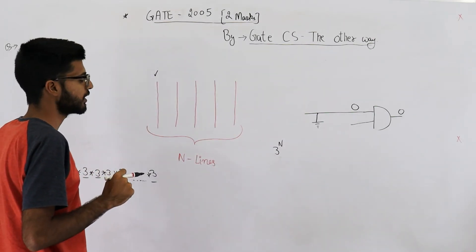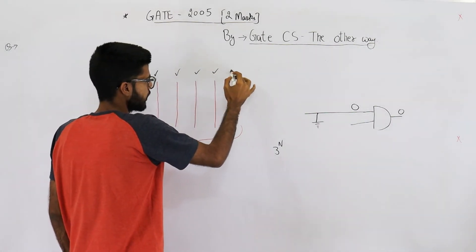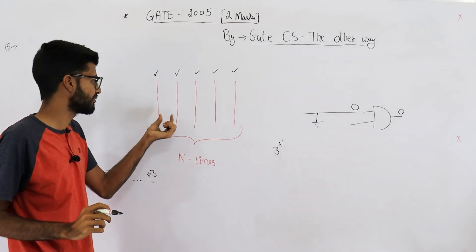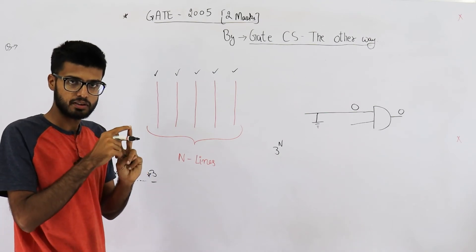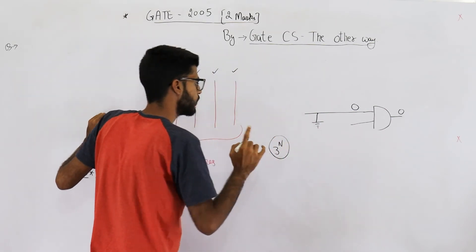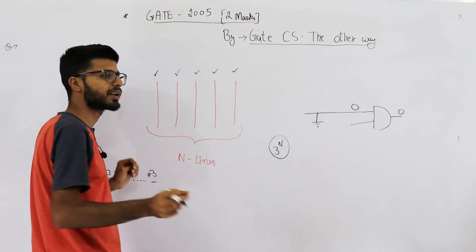Now you are actually counting a case where none of these lines have any fault. What is happening? You are saying every line has three possibilities: no fault at all, stuck-at-zero, stuck-at-one. Now in these 3^N cases, one case is such where each of these lines don't have any